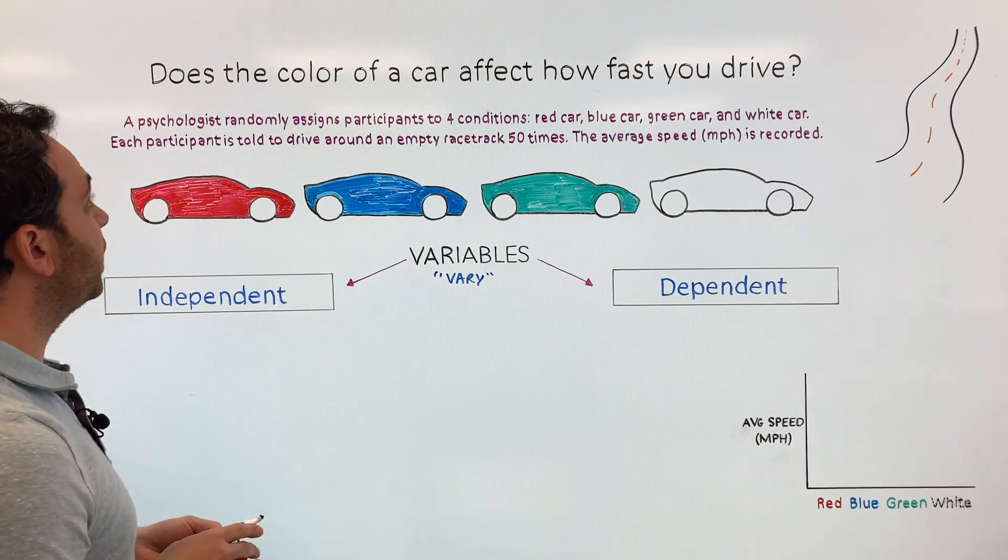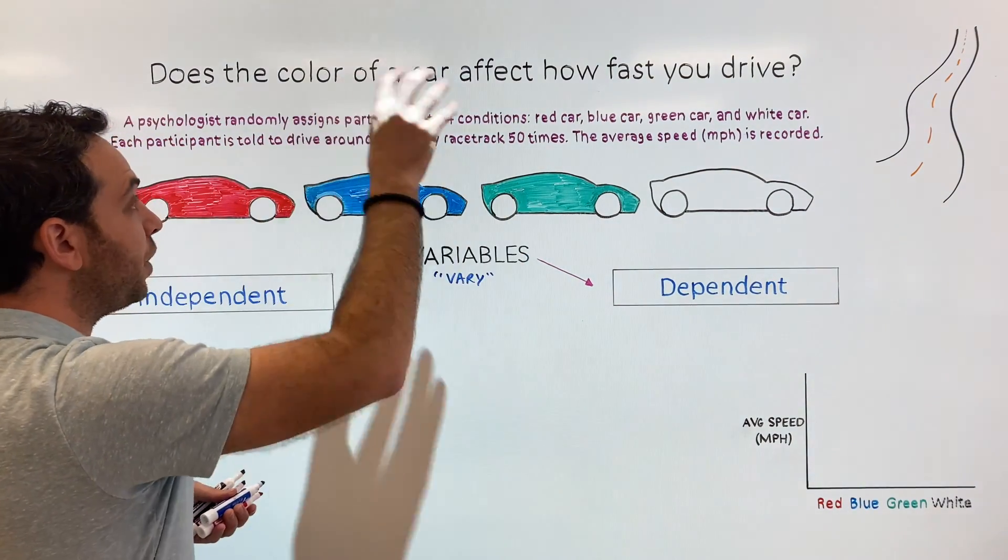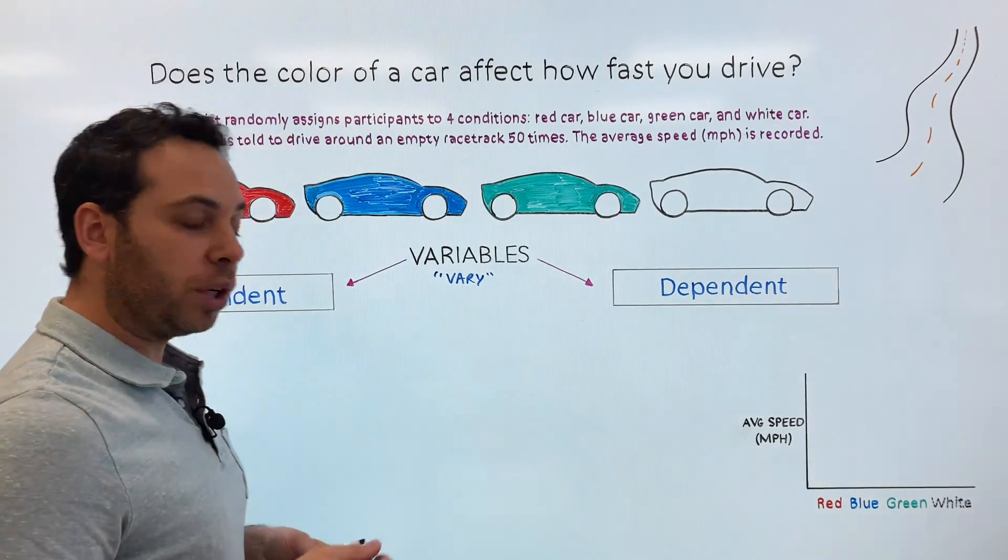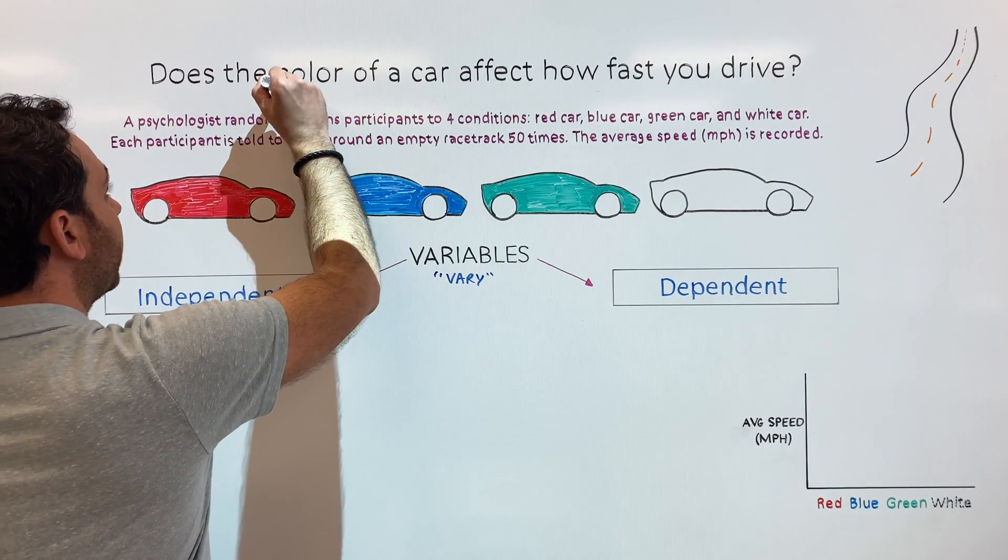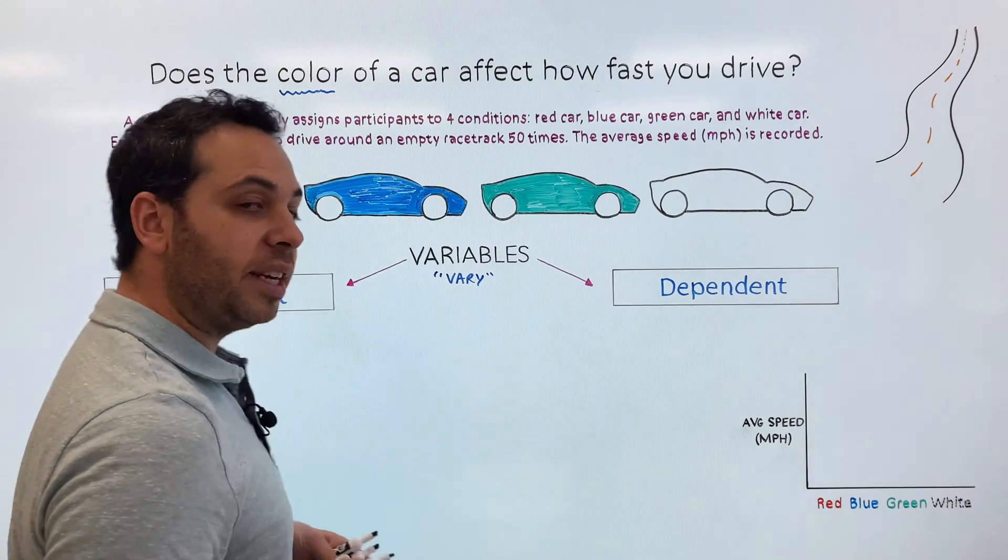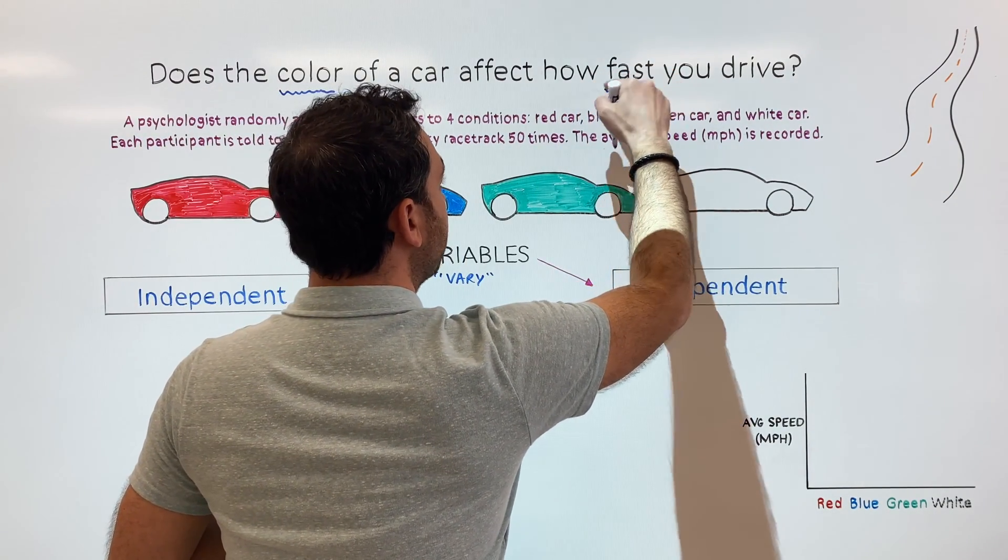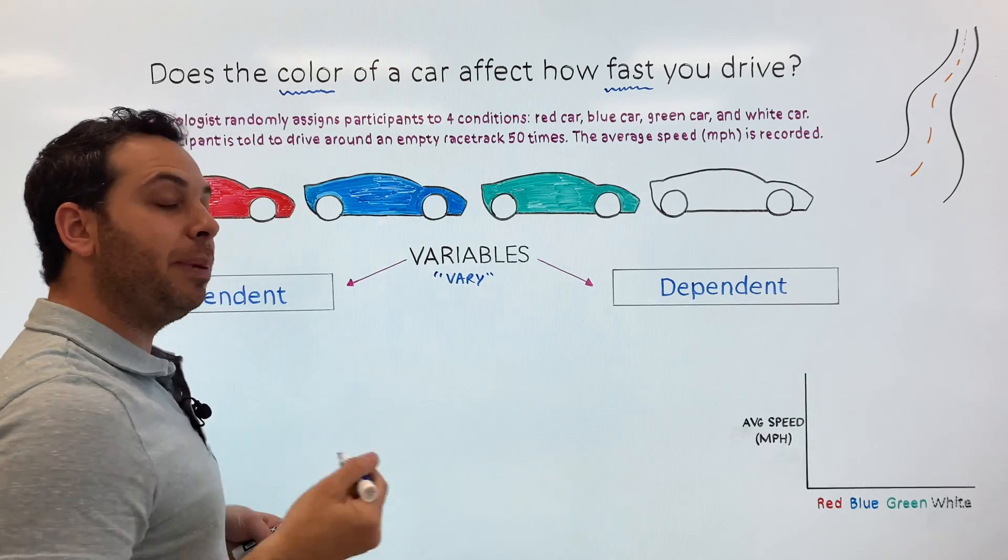Let's take a look at our question again. Does the color of a car affect how fast you drive? So what are the things within the study that can vary or change? Well, the color can, right? We have four different colors: red, blue, green, and yellow. And of course the speed, right? You could drive slow, you could drive fast. So those things become the variables.